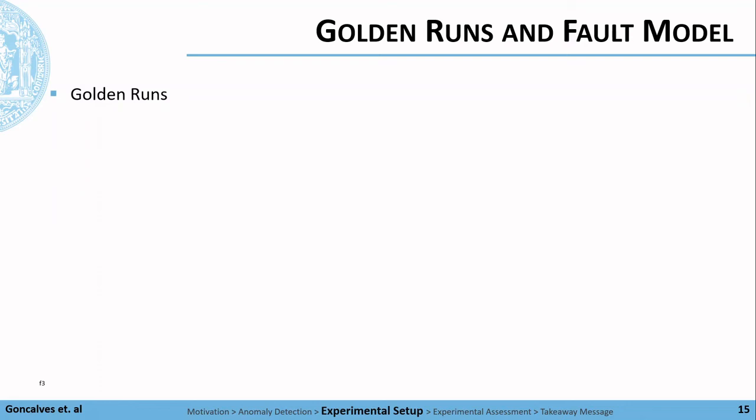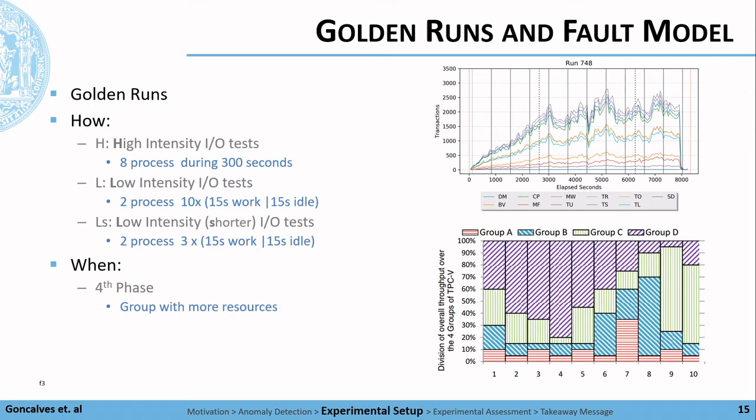To establish the baseline metrics, we run the system without any anomaly to characterize its behavior. We will reference those executions as golden runs. From the 16 virtual machines, three were used to emulate a malicious user running resource exhaustion anomalies on systems. Third party tools, Stress-ng, were used to exercise physical subsystems of the kernel and emulate resource exhaustion anomalies as attacks. We then established three fault models with different intensities to emulate an attack on the system.